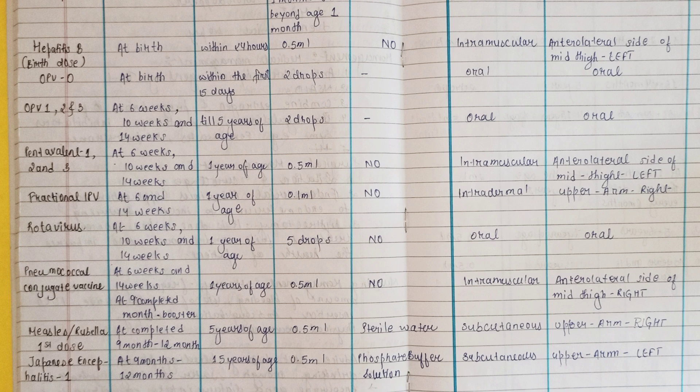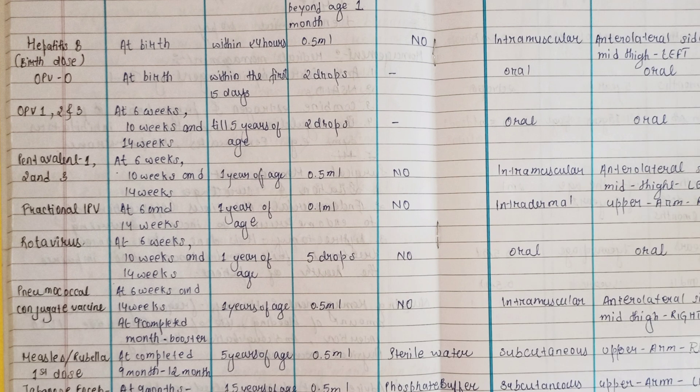The second vaccine is Hepatitis B, which is a birth dose given at birth or within 24 hours. The dose is 0.5 ml, the route is intramuscular, and the site is the anterolateral side of the mid-thigh left.